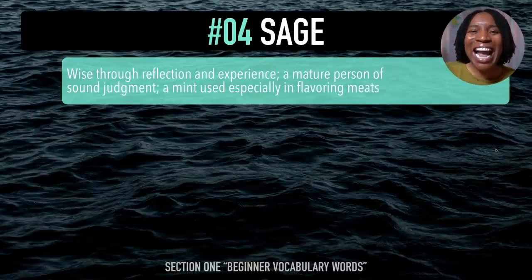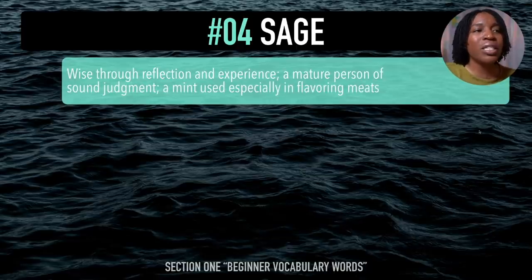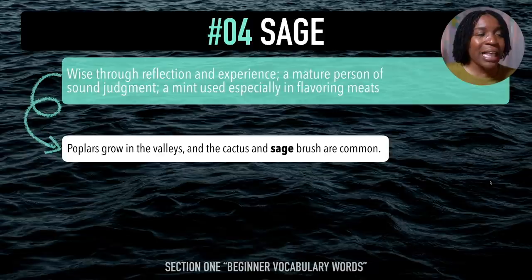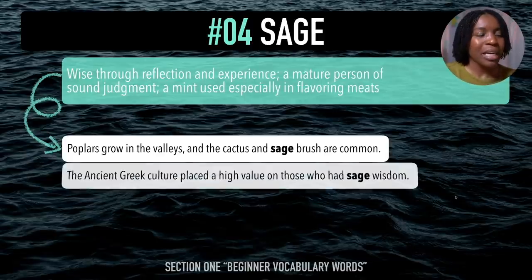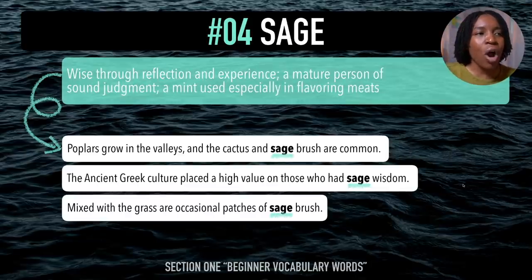The next word is 'sage'. Hear that 'juh' sound, right? After me — sage. This word means wise through reflection and experience, a mature person of sound judgment, or a mint used especially in flavoring meats. Example sentences: Poplars grow in the valleys and the cactus and sagebrush are common. The ancient Greek culture placed a high value on those who had sage wisdom. Mixed with the grass are occasional patches of sagebrush. Last time — sage.